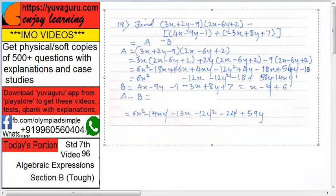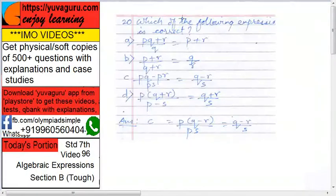Next, which of the following expressions is correct? See here: A, B, C, D. Which of them is correct? pq plus r upon q - can this be divided and we can get p plus r? No. p plus r upon q plus r equals to q upon r? That is also wrong.